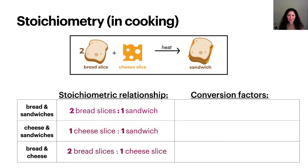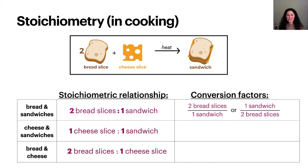Now that we have these stoichiometric relationships, it's a convenient time to point out that each can be treated as an equivalency and used as a conversion factor for dimensional analysis. Each stoichiometric relationship has two possible ways to write the conversion factor. For two bread slices to one sandwich, we can write it either as two bread slices over one sandwich, or one sandwich over two bread slices. Which one we use will depend on the rest of our dimensional analysis problem. Please write the conversion factors for cheese and sandwiches, and for bread and cheese.